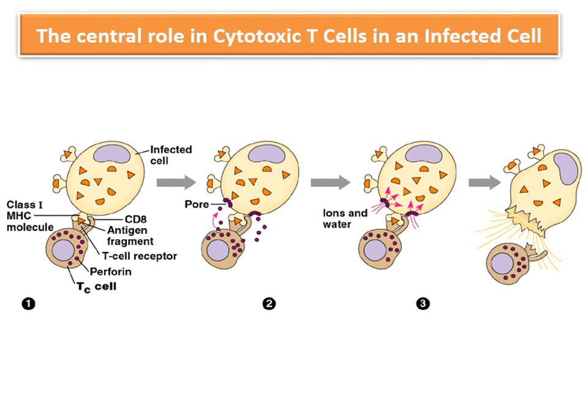This slide is for revision: when any infected cell presents antigen on the surface in combination with class 1 MHC molecules, it is recognized by the cytotoxic T cell. The perforins from the cytotoxic T cell cause the formation of pores in the infected cell, allowing entry of ions and water into the cell, and the infected cell bursts and is destroyed.